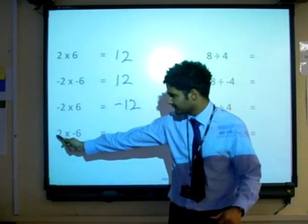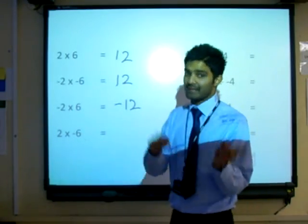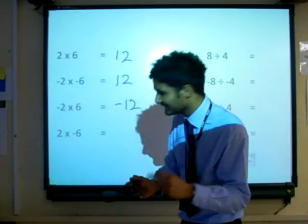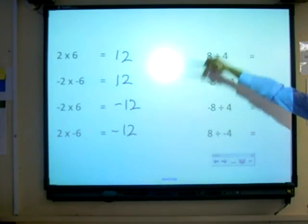Positive 2. Negative 6. Again, positive multiplied by negative equals, he gets it, negative. Negative 12. Okay, so that's multiplication.